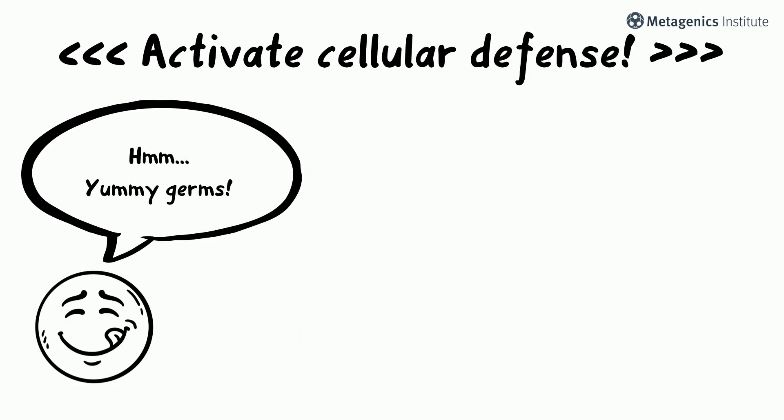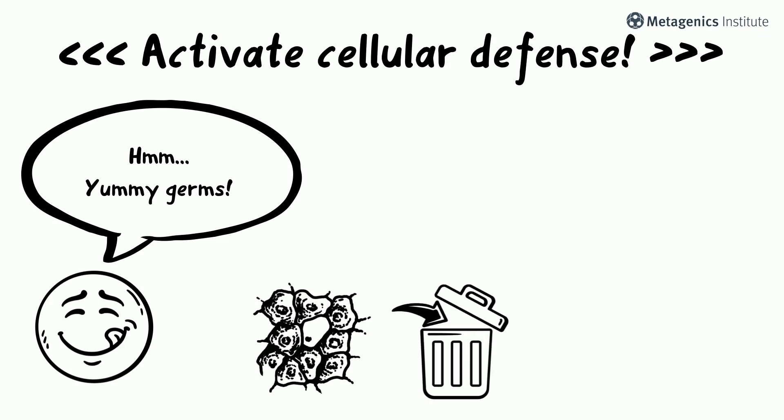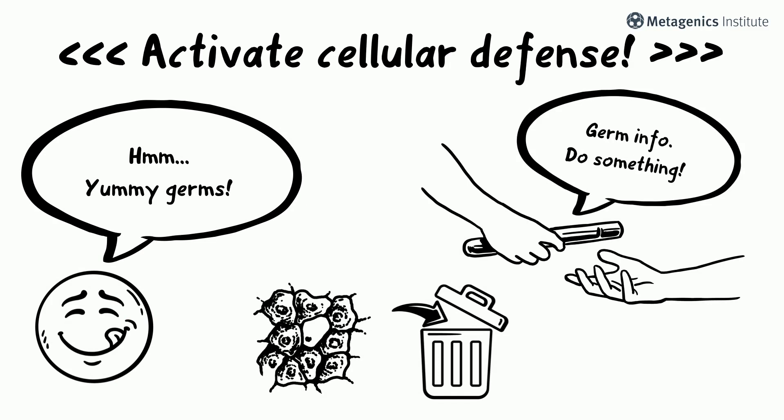If these barriers are breached, the innate immune system promptly calls upon various immune cells to defend. Some help eat the invading germs, some remove body tissues that are infected by the germs, while some pass the germ information to